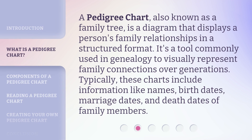A pedigree chart, also known as a family tree, is a diagram that displays a person's family relationships in a structured format. It's a tool commonly used in genealogy to visually represent family connections over generations. Typically, these charts include information like names, birth dates, marriage dates, and death dates of family members.